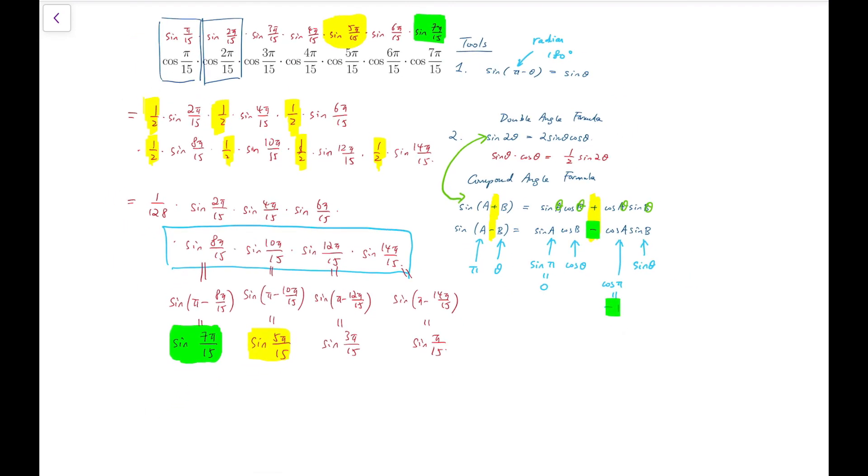Now, that means after multiplying by all those seven sine terms, I've returned with the sine terms again. The odd terms, pi over 15, 3 pi, 5 pi, 7 pi, are achieved after using the first tool, changing the 8 pi, 10 pi, the large terms, into the odd terms. While the even terms are obtained by double angle formulas.